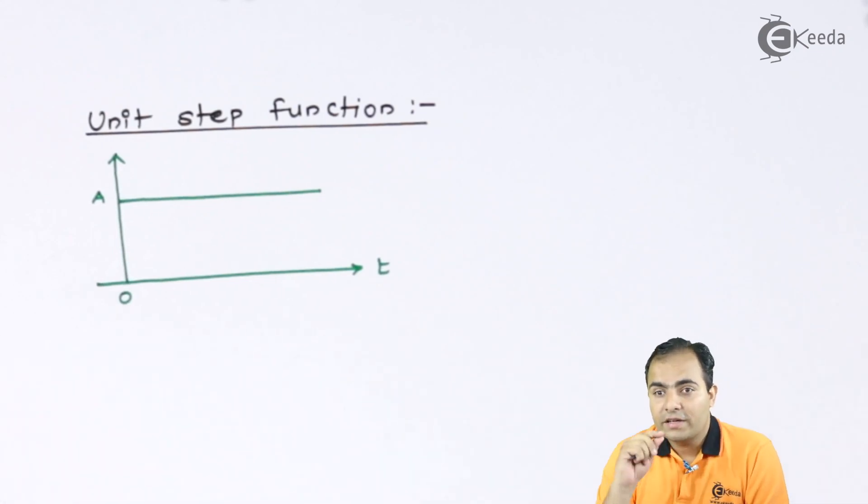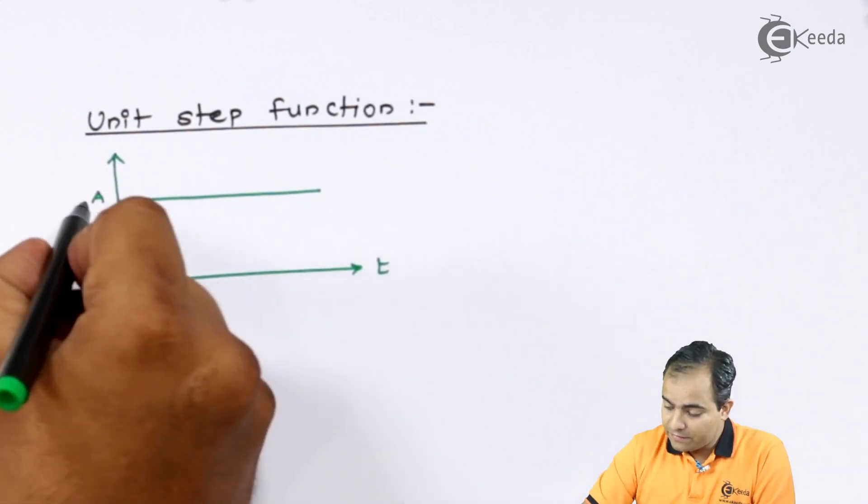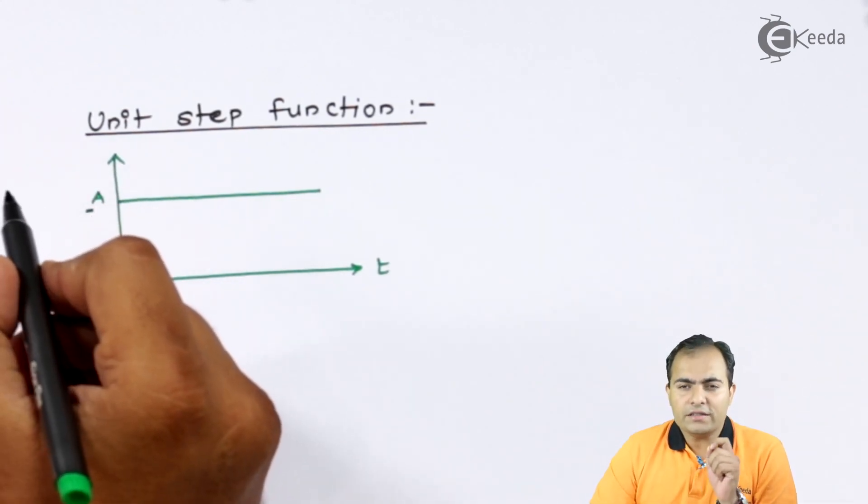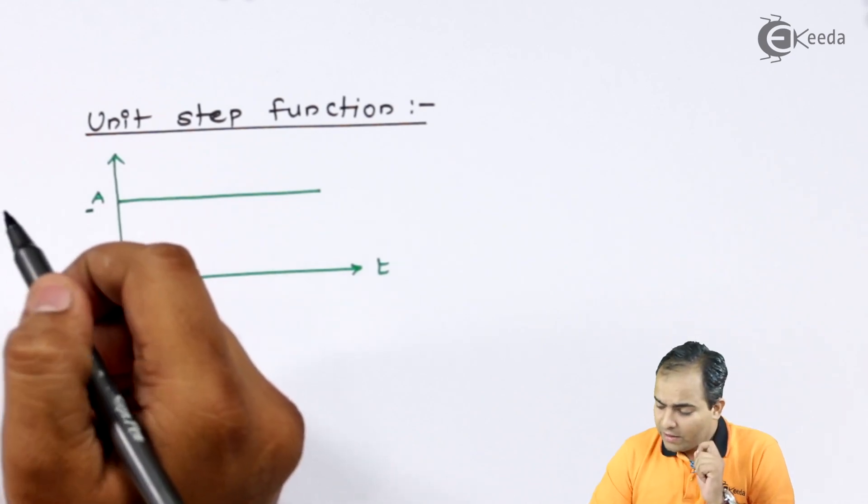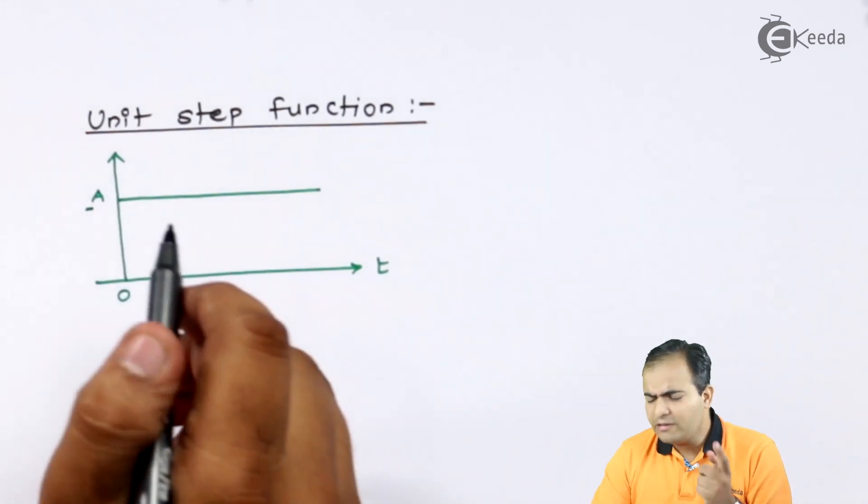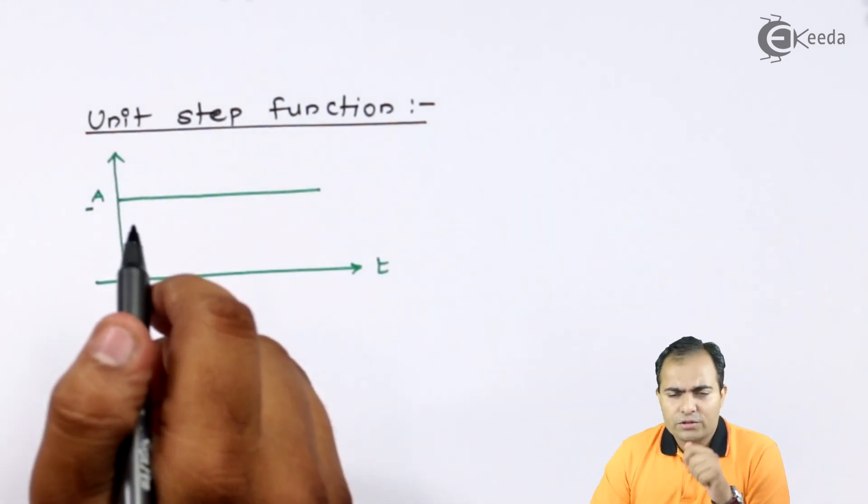I will repeat. If the amplitude of step function is 1, that is if this A value is 1, then this function is called a unit step function. Now, you should know how to represent this graph in equation format. So, let us start.